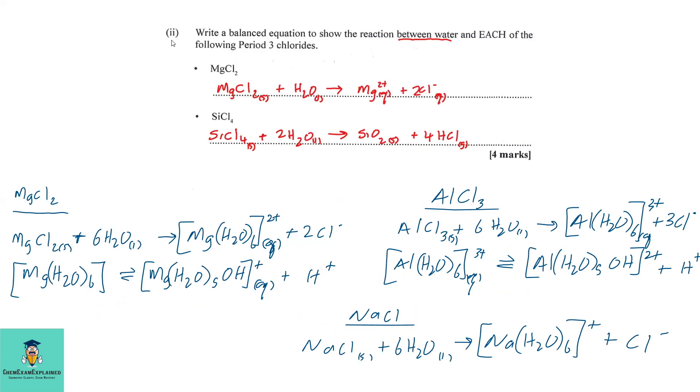Part 2: Write a balanced equation to show the reaction between water and each of the following period 3 chlorides. Well, in writing the equation, this is a simple version of a more complex equation. So because magnesium chloride is ionic, when it dissolves in water, it will separate into its ions, Mg2+ and Cl-. However, this solution is slightly acidic.